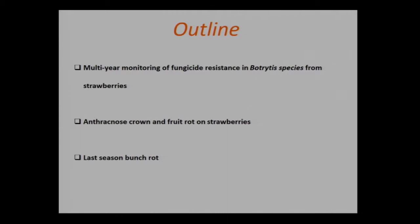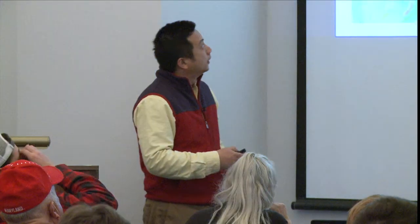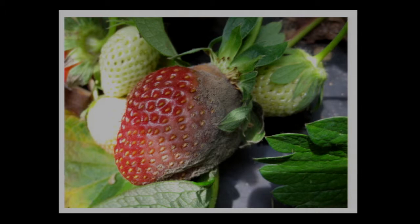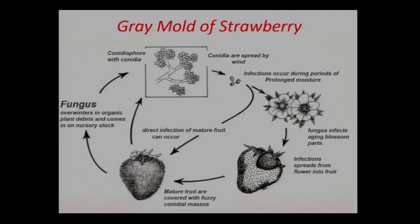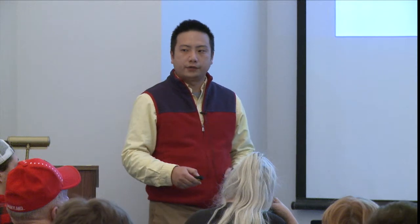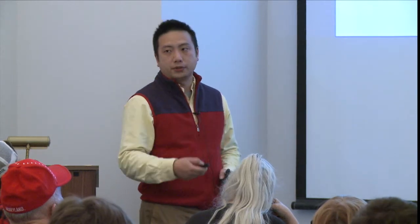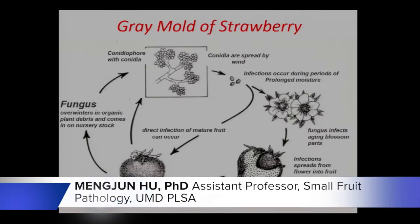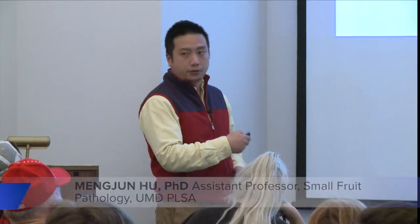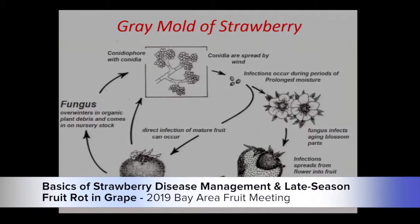The outline of my talk: we're going to talk about our multiple-year monitoring program of fungicide resistance in Botrytis cinerea from strawberries, then anthracnose and fruit rot on strawberries, and lastly I will talk about late-season bunch rot. Regarding strawberry gray mold — the picture is not very appetizing — the life cycle is very important. The fungus can come with transplants and can also enter the field from nearby small fruit fields like blackberries and grapes. The fungus typically starts to infect flowers when strawberries are flowering, and the disease will stay latent until ripening of the fruit. Then the spores produced from the fruit will continue to infect other healthy fruit.